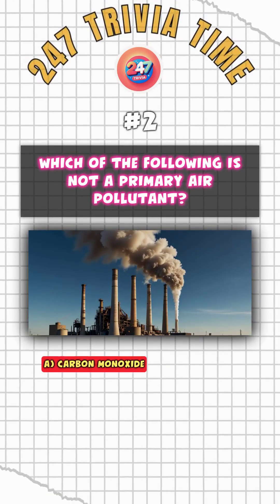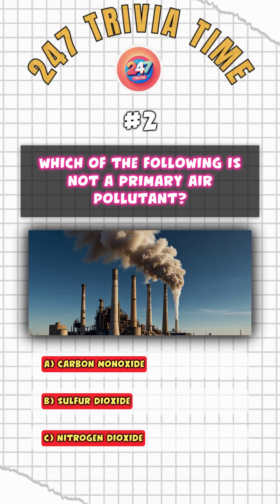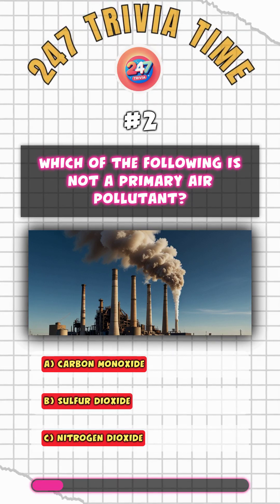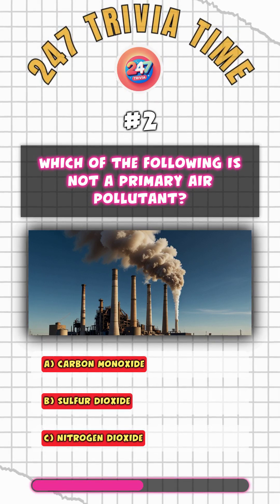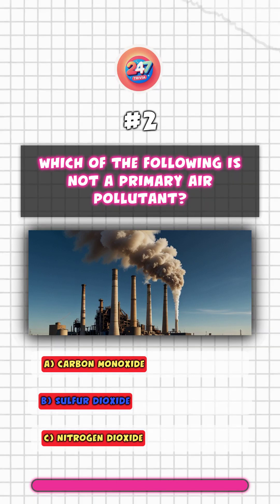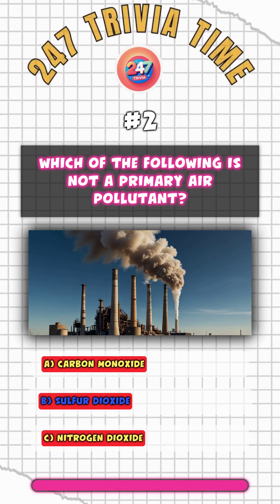Which of the following is not a primary air pollutant? B. Sulfur dioxide.